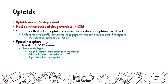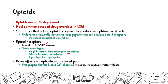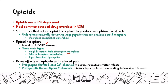When opioids bind to these receptors, they produce euphoria and reduced pain via two main mechanisms. On the presynaptic nerve, opioids close the calcium channel, preventing neurotransmitters from being released into the synaptic cleft. On the postsynaptic nerve, they open potassium channels to hyperpolarize the nerve, making it harder to produce signal transduction. This is very high yield for how nerves function.